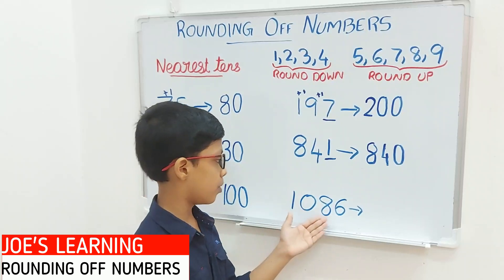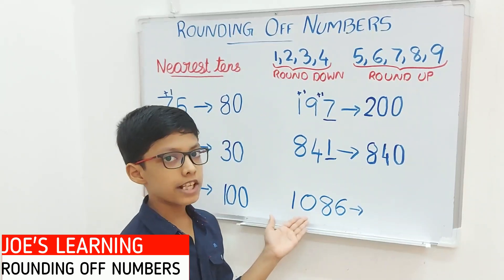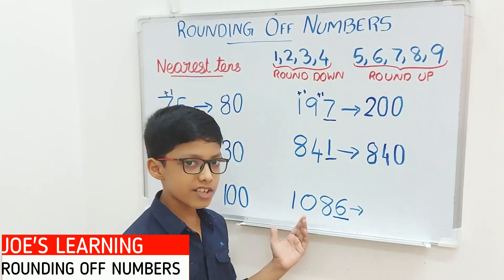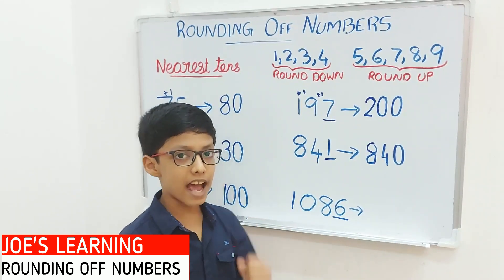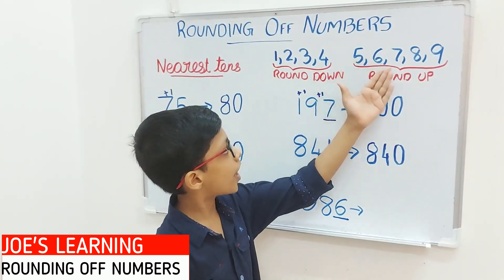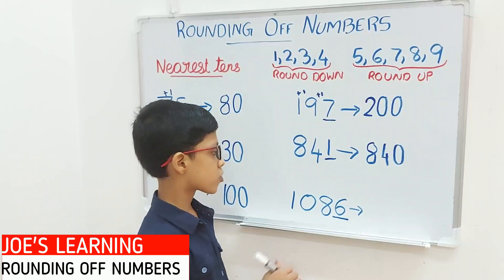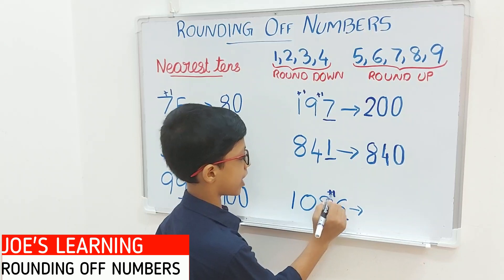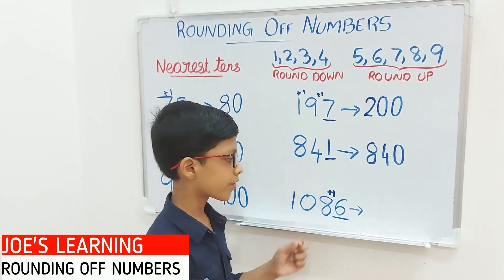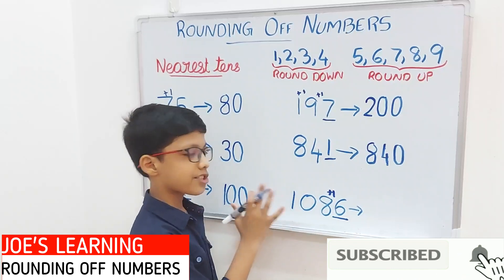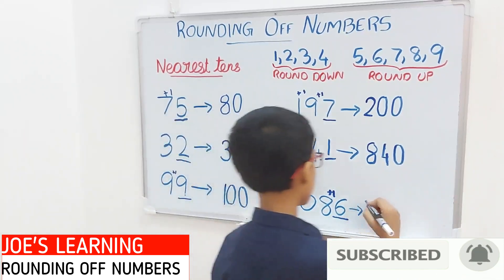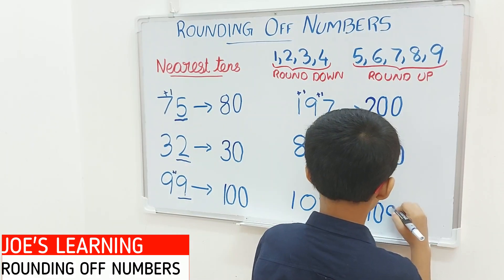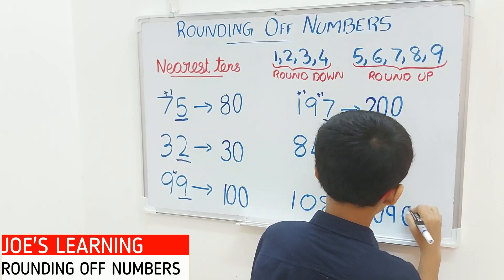Now let's try with the four-digit number 1086. Again we look at the digit in the 1's place — 6 is in the 1's place. As 6 is greater than 5, we round upwards: put a 0 in the 1's place and add 1 to the digit in the tens place. So 8 plus 1 is 9, and we leave the rest of the places as they are. So 1086 rounded off to the nearest tens equals 1090.